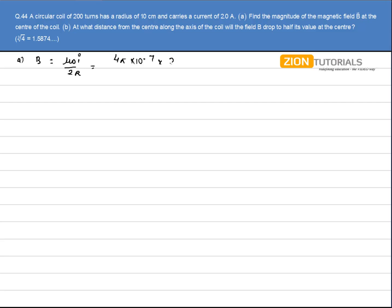I have current as 2 Ampere. Number of turns is 200. Divide by 2, radius is 10 centimeter that is 0.1.